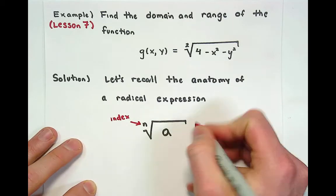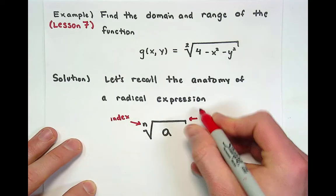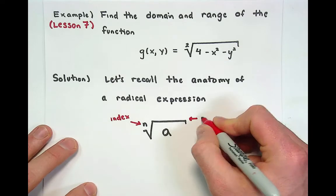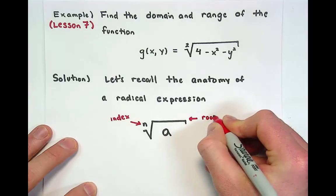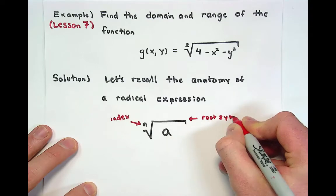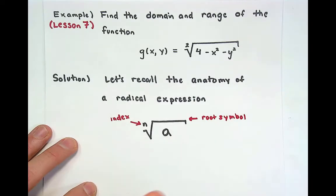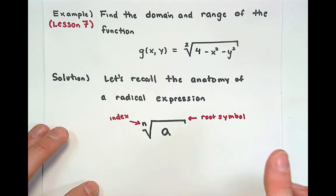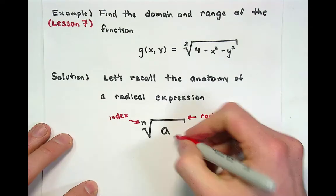This squiggly symbol right here is a symbol of hope in the city of Gotham, also known as the root symbol. And if you are really excited about life, you could call it the radical symbol, because it's so radical, it's totally gnarly.